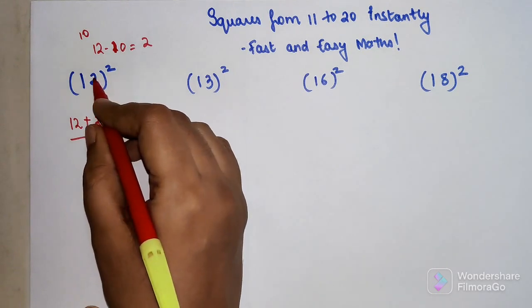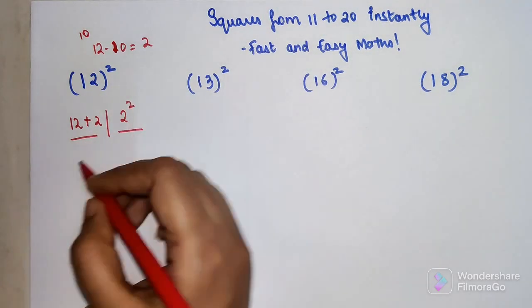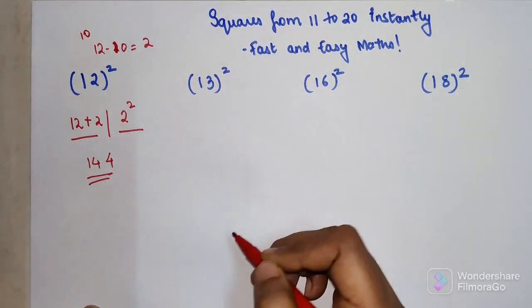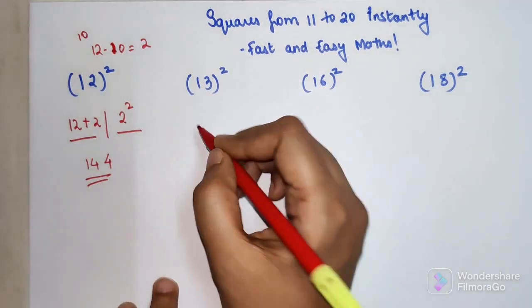The next part is nothing but the last number squared, so 2 squared. So your 12 plus 2 is 14, and 2 squared is 4, so your answer is 144.